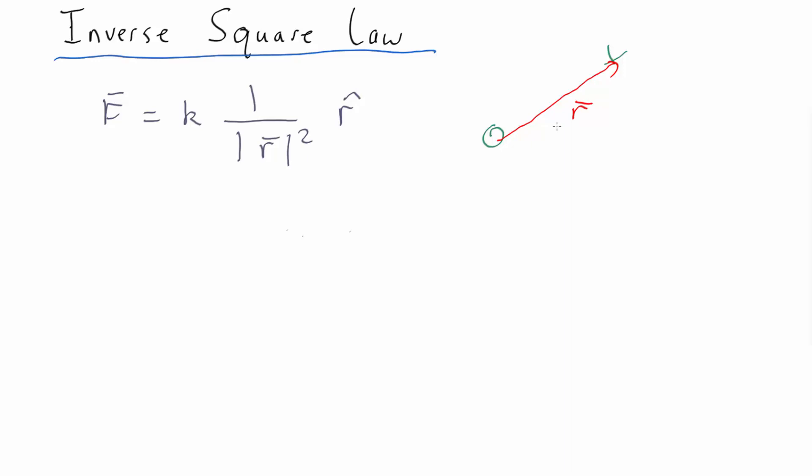So what this is telling us is there's a constant, then there's that distance which is mod r squared, and it's one over that, so as you get further away it gets weaker. And because it's got the r hat unit vector, that means it's pointing in a radial direction.